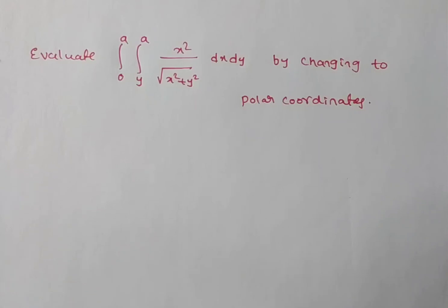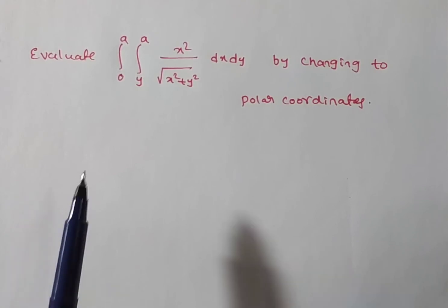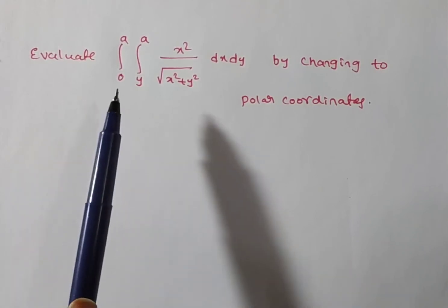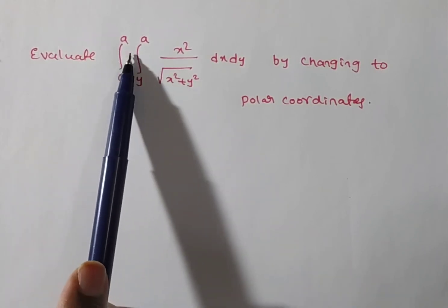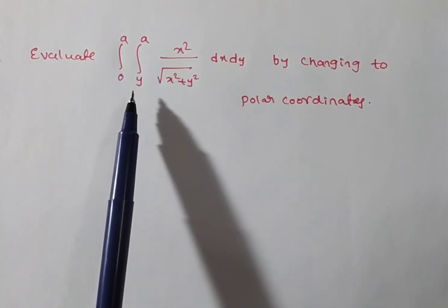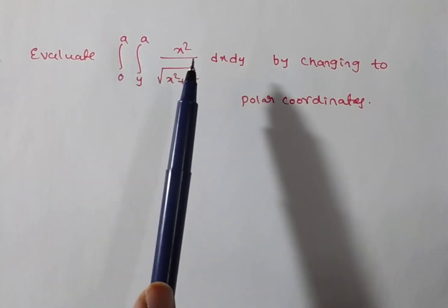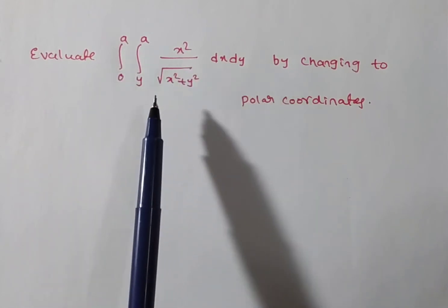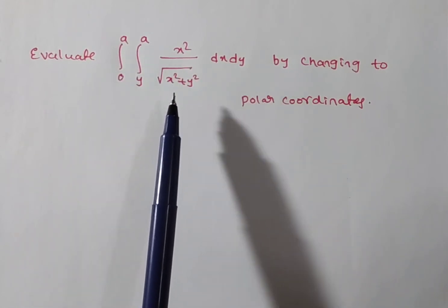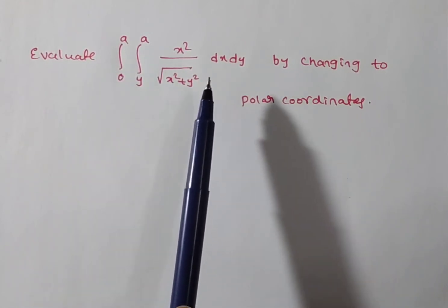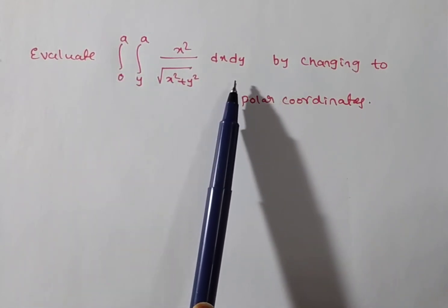Hi friends, in this video we are solving a problem on multiple integrals. The given problem is: evaluate the integral from 0 to a, integral from y to a, of x squared divided by the square root of x squared plus y squared, dx dy, by changing into polar coordinates.